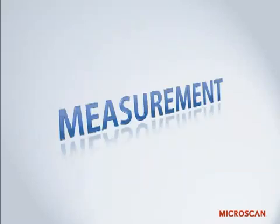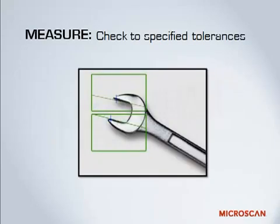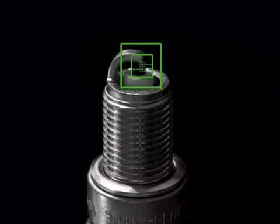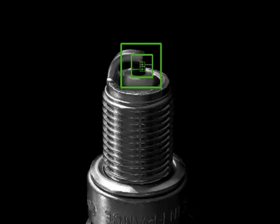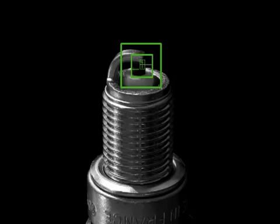Since its start, machine vision has been widely used for measurement — the automated measurement by a machine — which can then be checked to a specified tolerance. For example, something we've been doing for years with machine vision is measuring the gap in spark plugs. This gap needs to be a certain width or the car won't run as well, making it an extremely critical spec for the part. We can use a camera to measure the spark plug gap by machine, eliminating the need for a person to measure and adjust the gap manually, and automate the process more quickly and accurately.